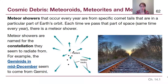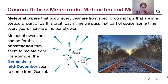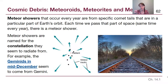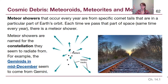Meteor showers are really interesting because they tend to occur every year and appear to come from the same patch of sky from one year to the next — that's where their names come from. If we think about railroad tracks, we know they aren't physically coming to a point in the distance — that just looks like it from perspective. Meteor showers do the same thing, appearing to come from a single distant point.